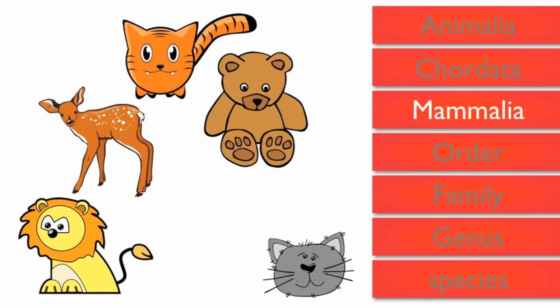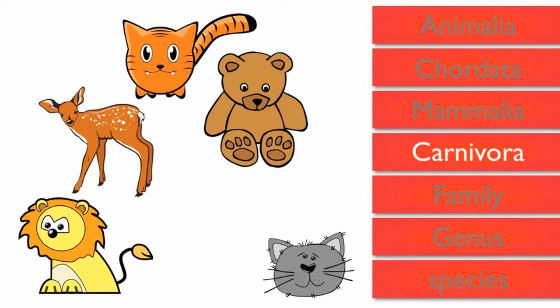Order is the name of the next level, and the order a lion belongs to is called Carnivora, which means meat-eating. The deer is not a member of this order, and it is removed.